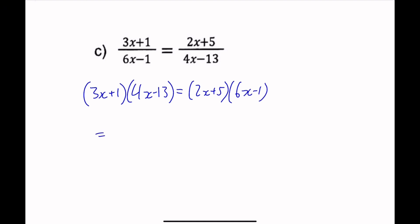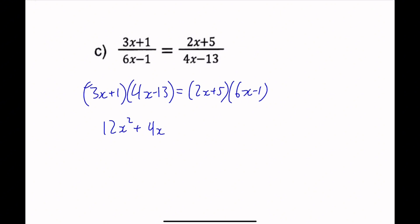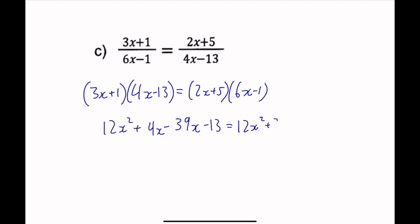Expanding the left side: 12x squared, plus 4x, minus 39x, minus 13. The right side: 12x squared, plus 30x, minus 2x, minus 5.